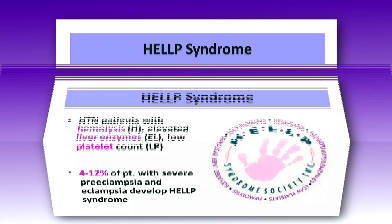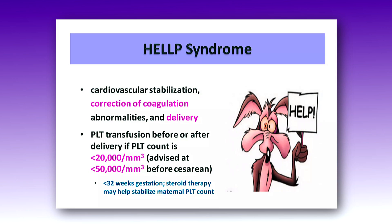If there are any symptoms of HELLP syndrome, we have to stabilize the cardiovascular symptoms, correct the coagulation abnormality, and proceed to delivery. If the platelet count is less than 20,000, we can transfuse platelets. If the gestational age is less than 32 weeks, steroid therapy may help to stabilize the maternal platelet count.